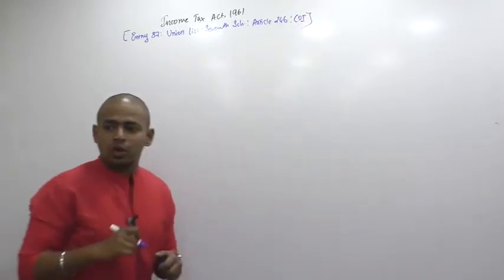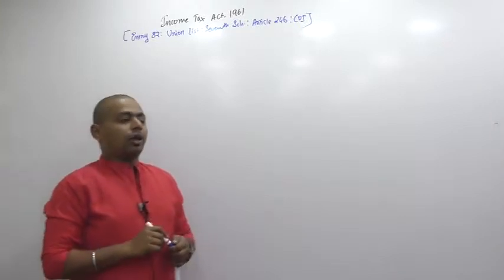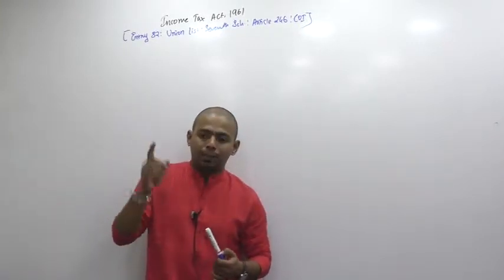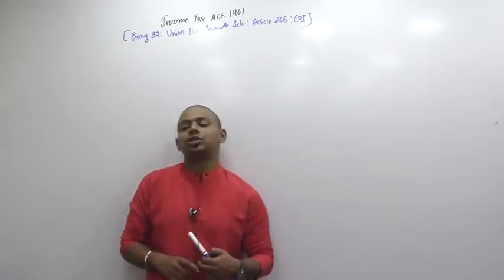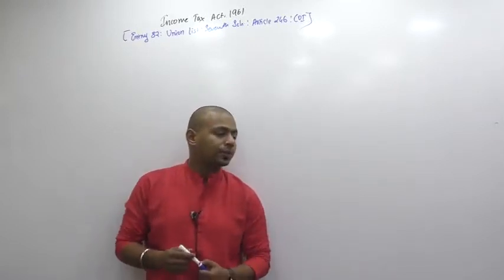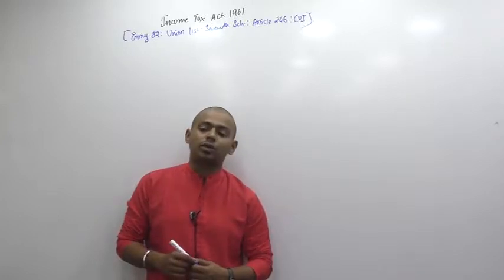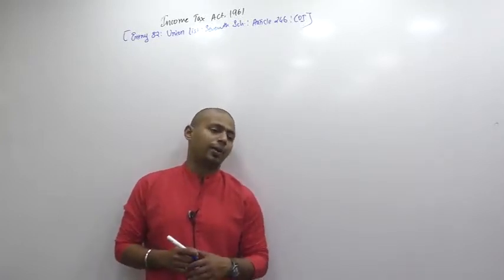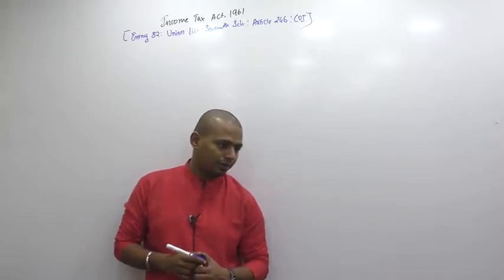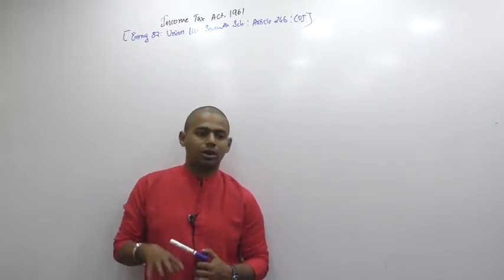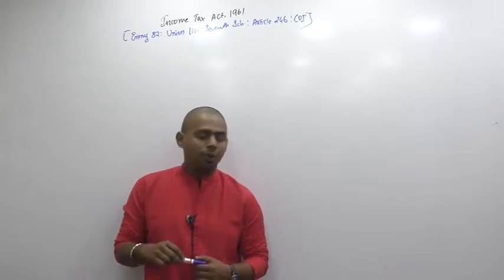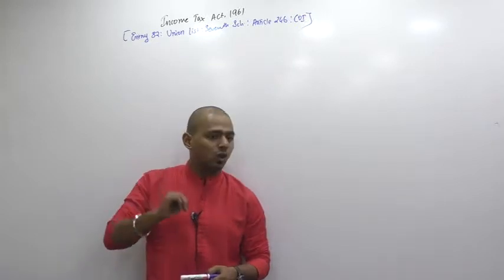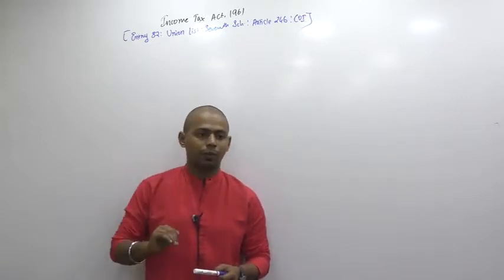So my law is constitutionally valid. Now whenever you say any law or any act, the act will be divided into chapters. Chapters are divided into sections, sections into subsections, subsections into clauses, clauses into sub-clauses, para, sub-para, and sub-sub-para. This is how they create an act. Act divided into chapters, chapters into sections, sections into subsections, subsections into clauses, clauses into sub-clauses.